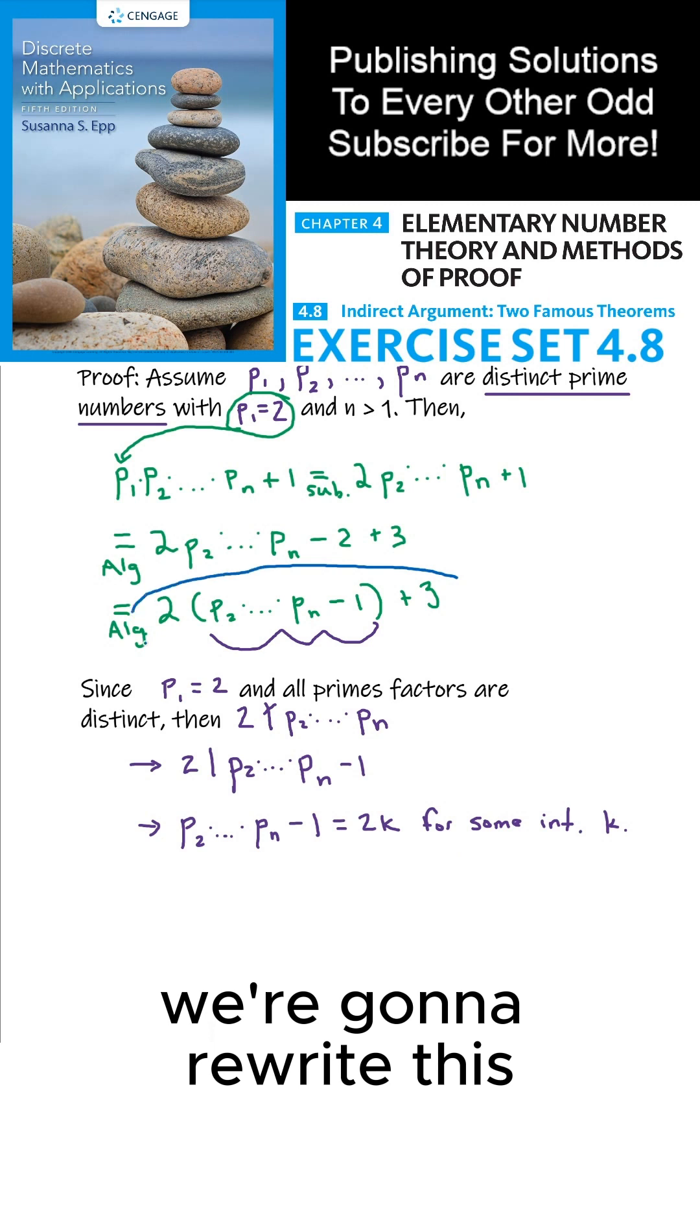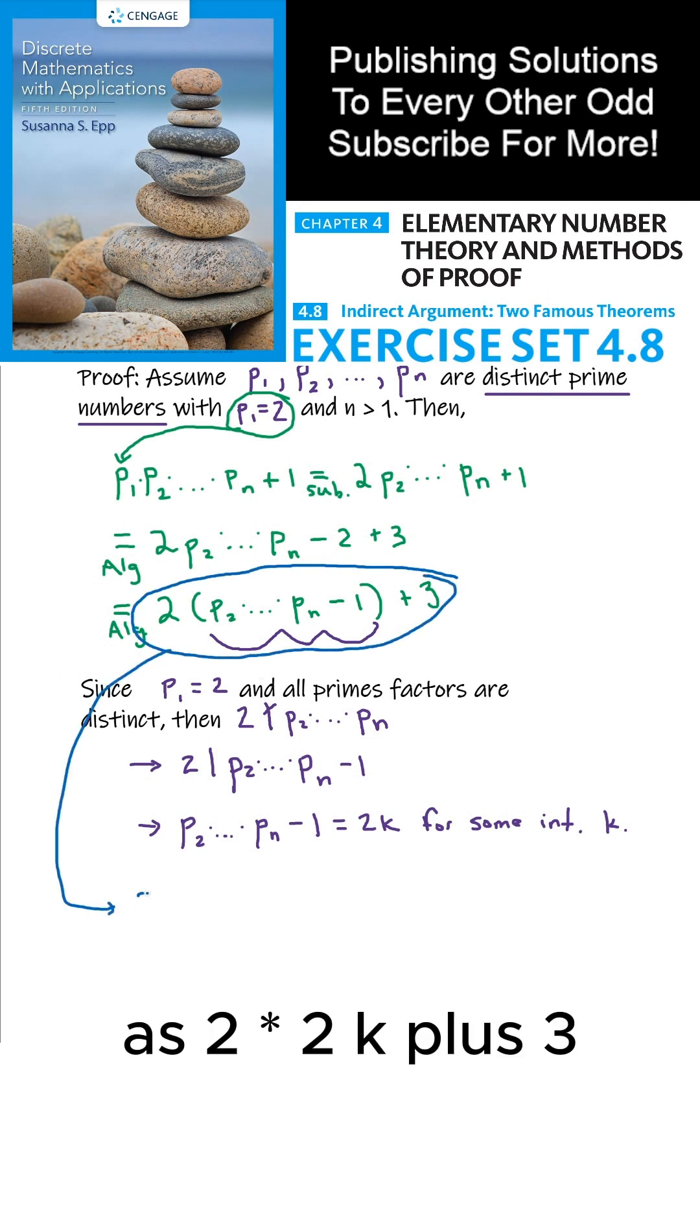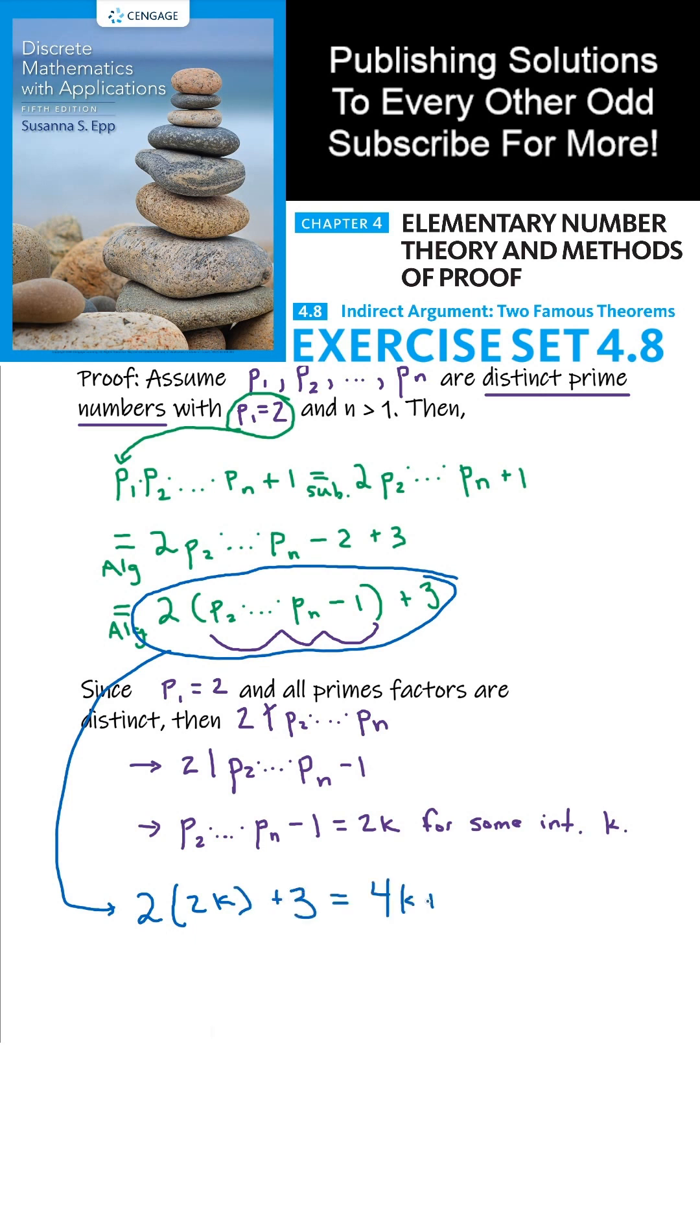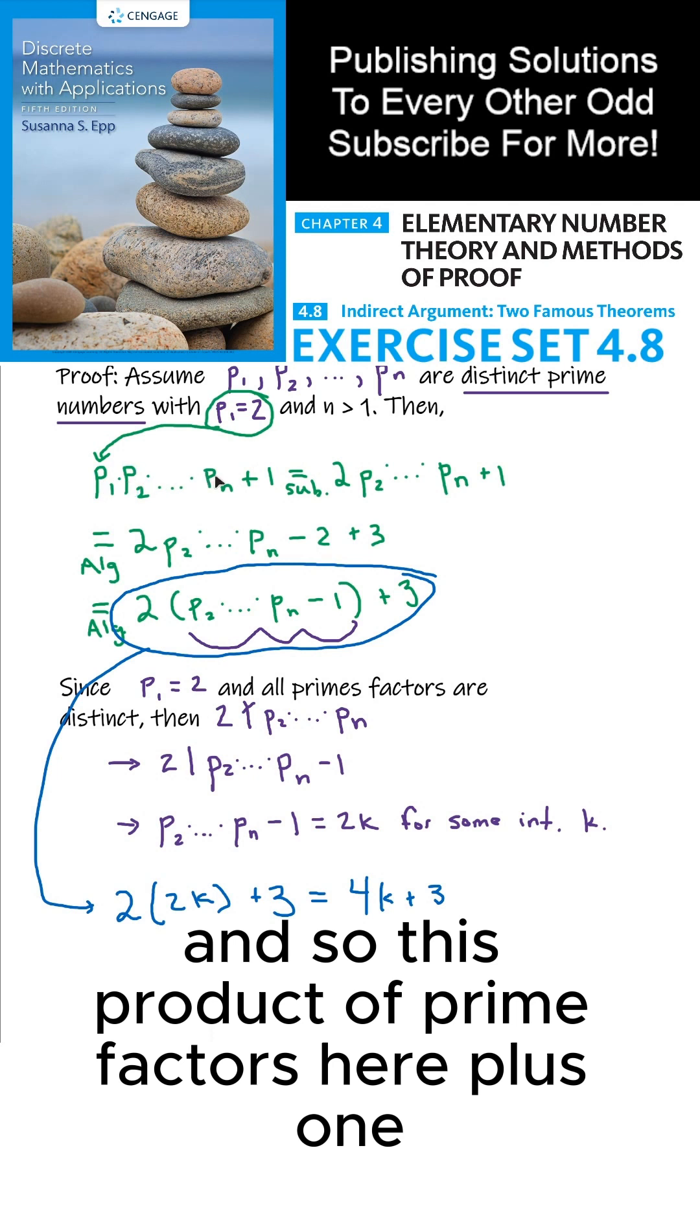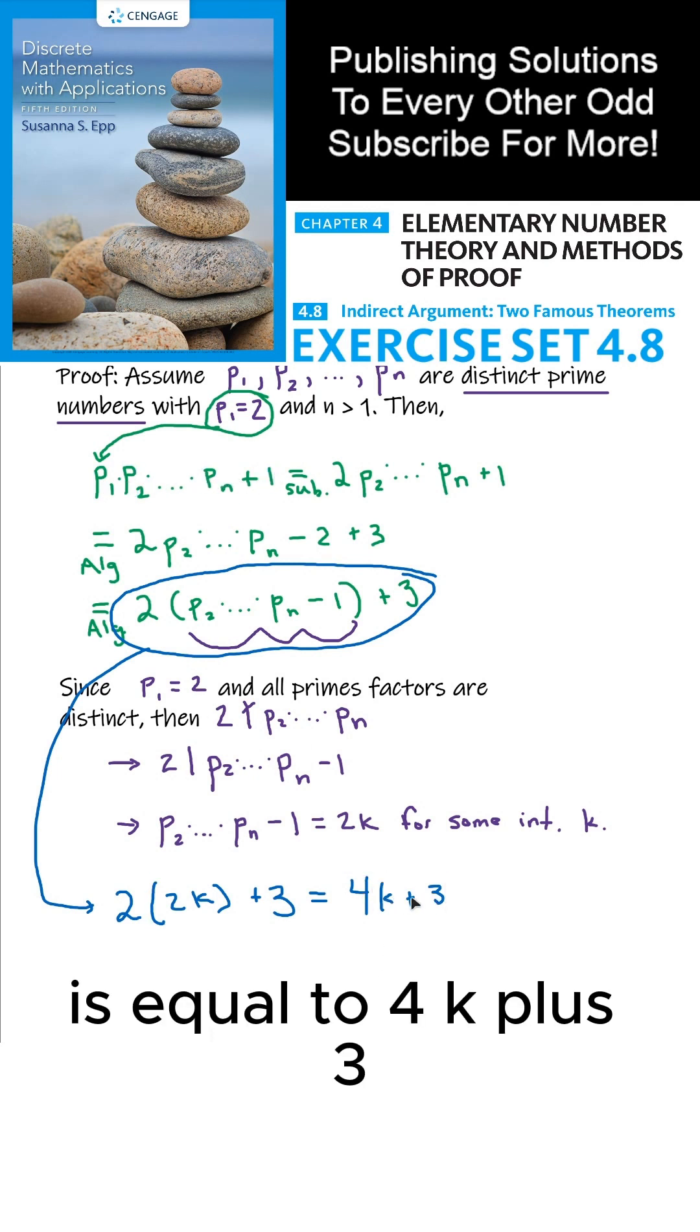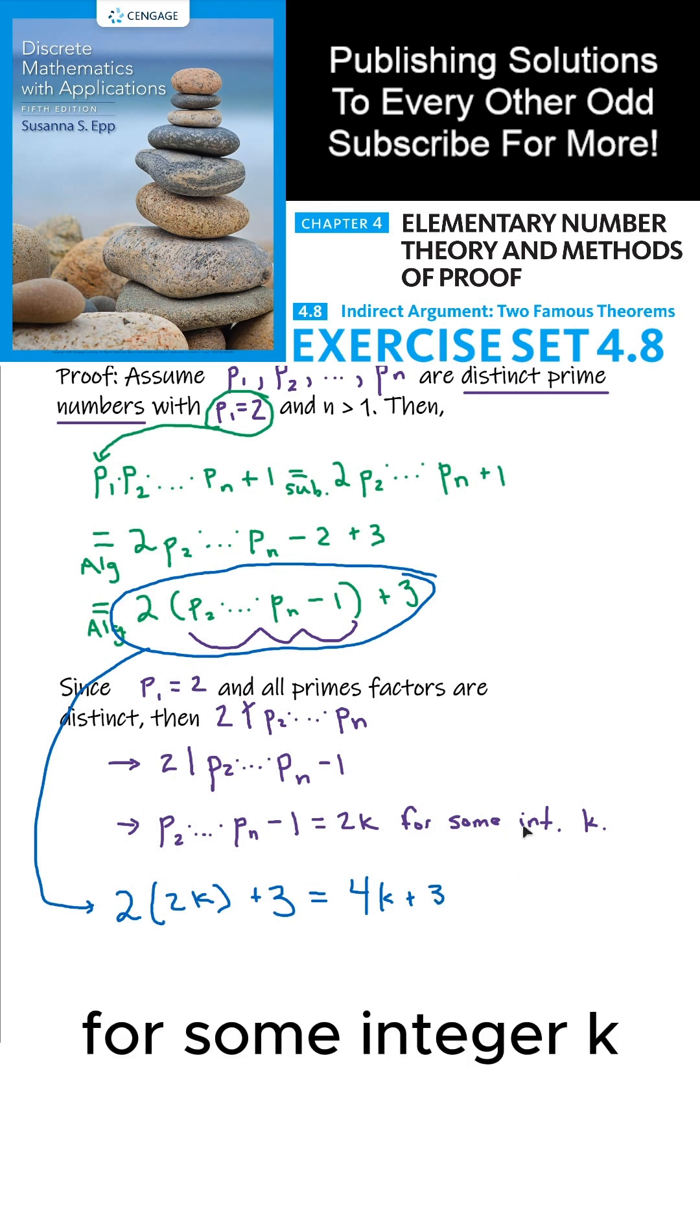And so next we're going to rewrite this as 2 times 2k plus 3, which is 4k plus 3. And so this product of prime factors here, plus 1, is equal to 4k plus 3 for some integer k.